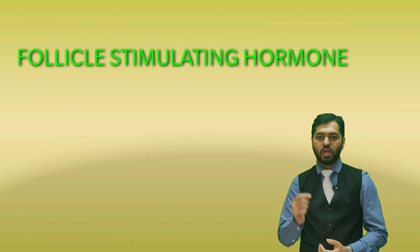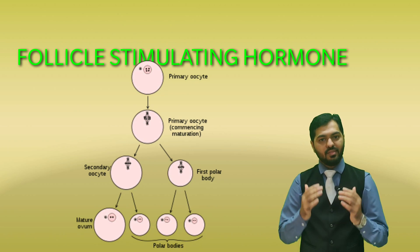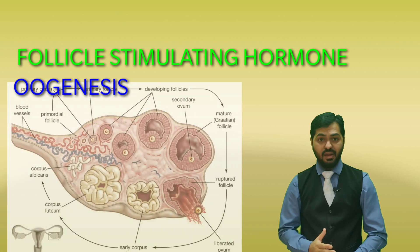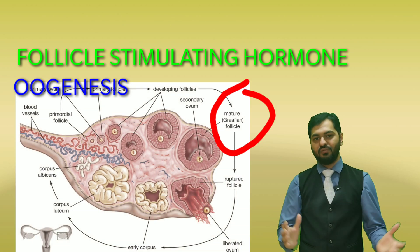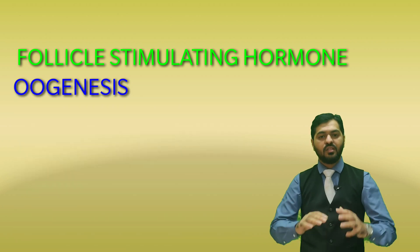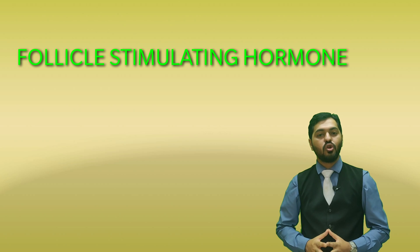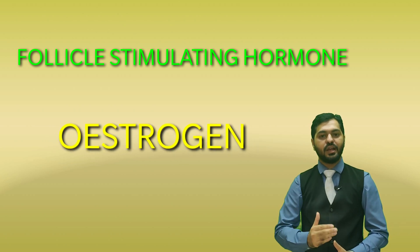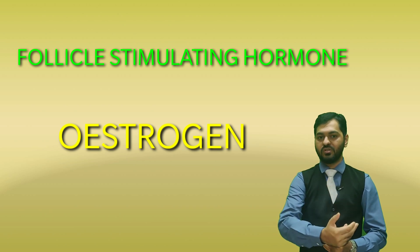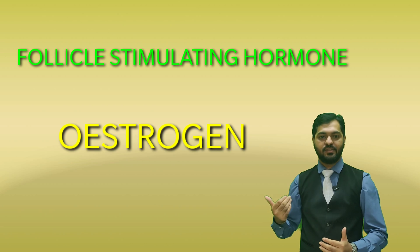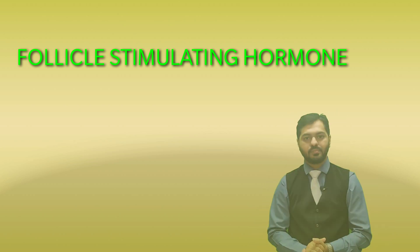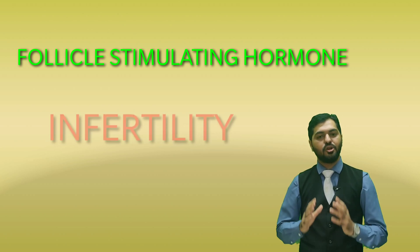In females, FSH stimulates the germinal epithelial cells, resulting in formation of the ovum through oogenesis. FSH also stimulates development of follicles, ultimately forming a mature Graafian follicle inside which the ovum develops. Importantly, the follicular cells secrete estrogen, which controls secondary sexual characters in females. Estrogen secretion is therefore indirectly controlled by FSH. Deficiency of FSH in males inhibits spermatogenesis, and in females it inhibits oogenesis, resulting in infertility in both sexes.